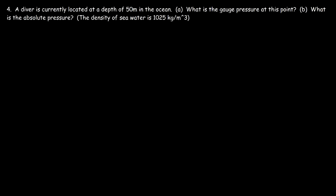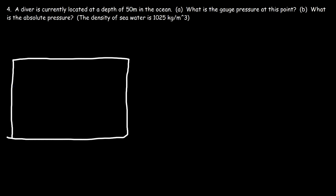Number four: a diver is located at a depth of 50 meters in the ocean. What is the gauge pressure at this point, and what is the absolute pressure? The gauge pressure is the pressure due to the fluid — the water alone. The absolute pressure is the total pressure due to the weight of the water above the diver plus the weight of the atmosphere.